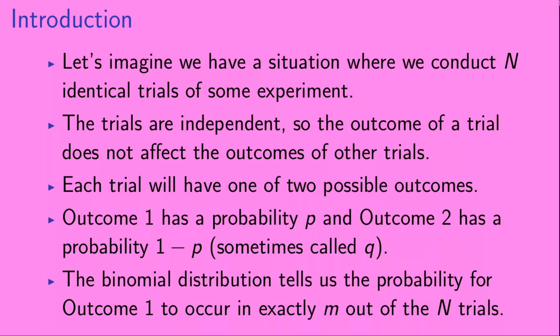Let's imagine we have a situation where we conduct N identical trials of some experiment. The trials are independent, so the outcome of a trial does not affect the outcomes of other trials. Each trial will have one of two possible outcomes. Outcome 1 has a probability p, and outcome 2 has a probability of 1 minus p. Sometimes 1 minus p is called q. The binomial distribution tells us the probability for outcome 1 to occur in exactly m out of the n trials.